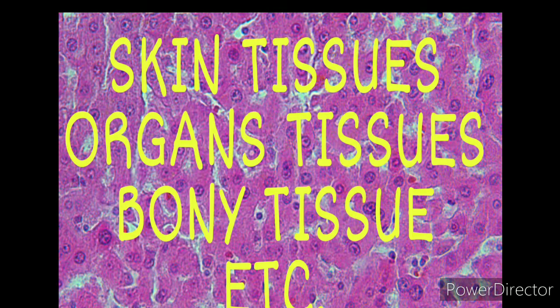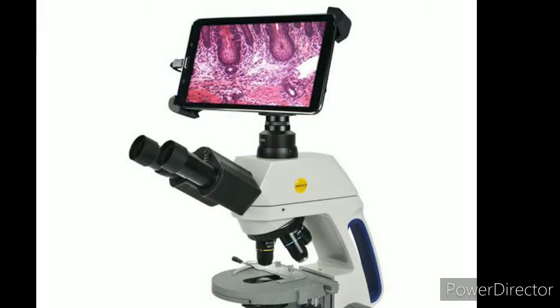Now the question is: what type of tissue study is done in histology? In histology we can study all types of tissues — for example, skin tissue, organ tissues, bones, etc. The microscope has a key role in histology. So let's take a look at tissues.